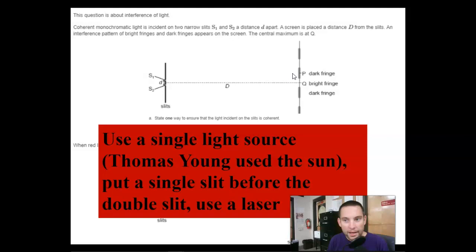So, one way to ensure light is coherent, you can use a single light source. Thomas Young used the sun. You can put a single slit before the double slit, or you could use a laser. Any one of those ways is going to give you coherent light.